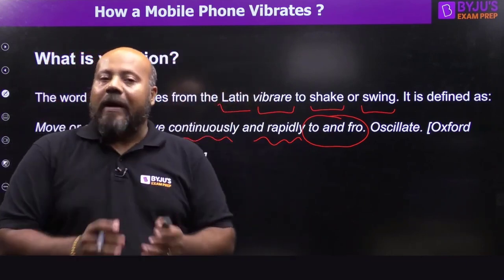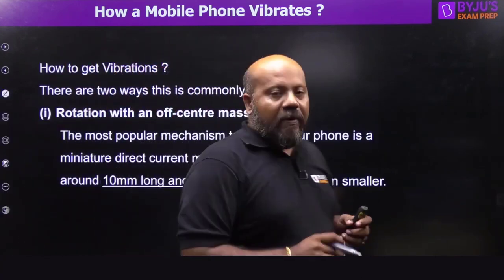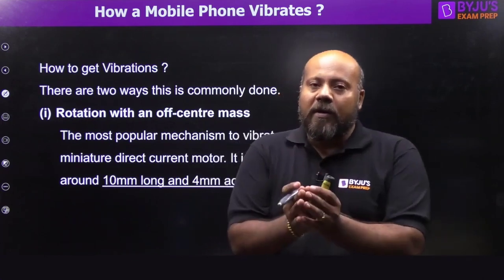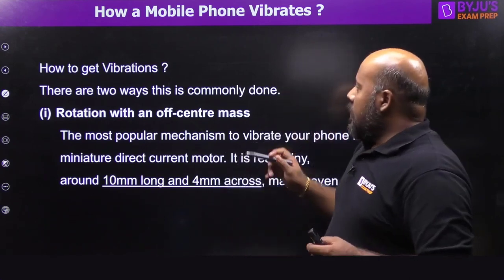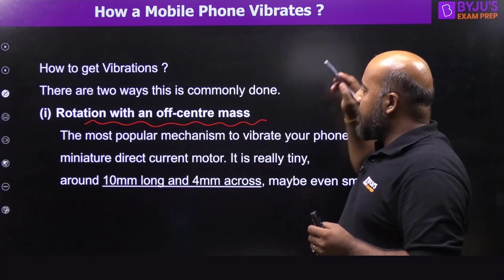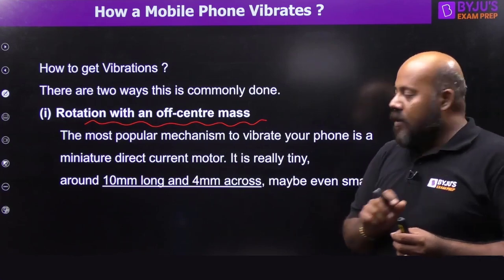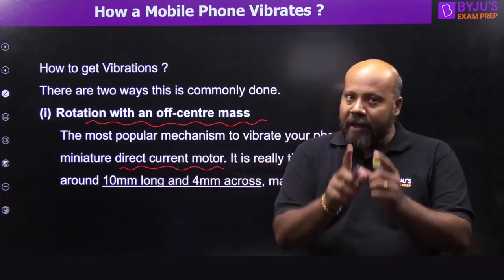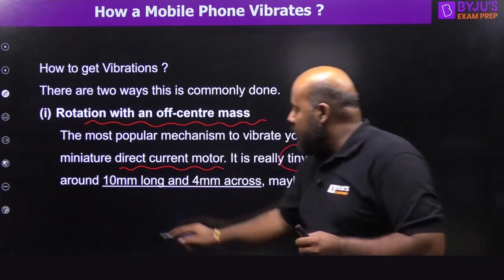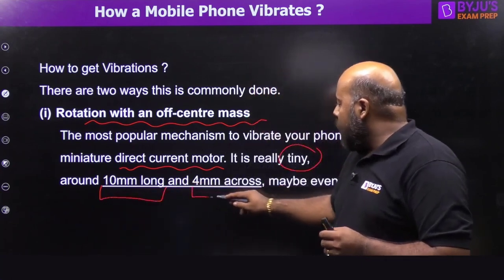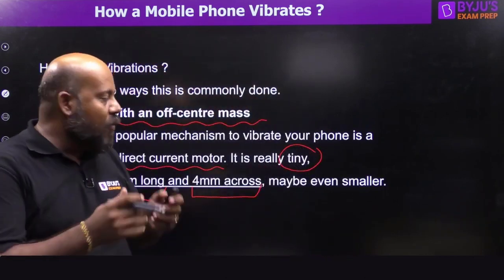To provide this vibration, we have two solutions. The first one is an eccentric load DC motor, that is an unbalanced load DC motor. The most popular mechanism to vibrate your phone is a miniature direct current motor. It is really tiny — 10 mm long and 4 mm across, and maybe even smaller.